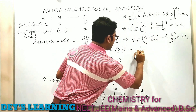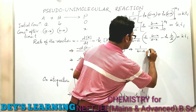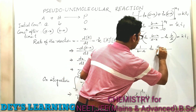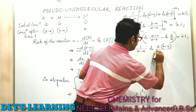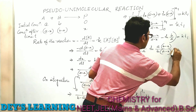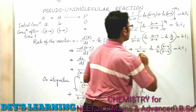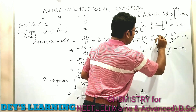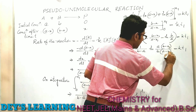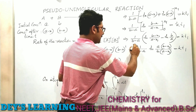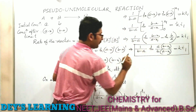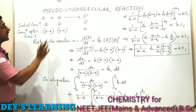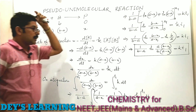This simplifies to 1/(B minus A) times ln[A(B minus x1) / B(A minus x1)] equals K·t1. This is the integrated form of the second order reaction where the initial concentrations of the two reactants are A and B.